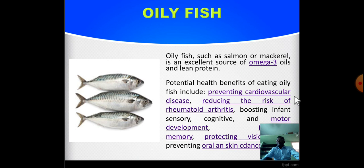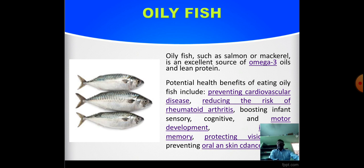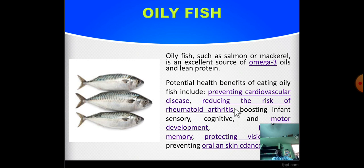Then oily fish. Oily fish such as salmon and mackerel are an excellent source of omega-3 oils and lean proteins. The health benefits of eating oily fish include preventing cardiovascular disease, reducing the risk of rheumatoid arthritis, boosting infant sensory, cognitive and motor development, improving memory, protecting the senses, and prevention of oral and skin cancer.